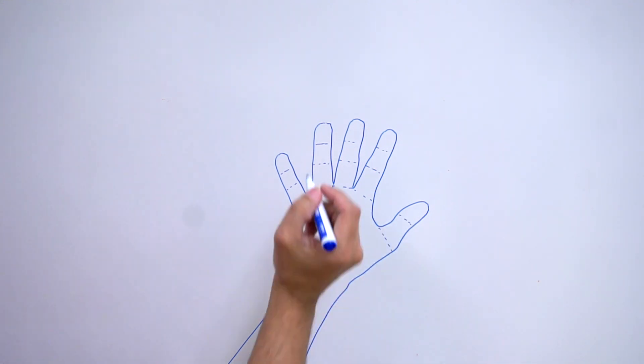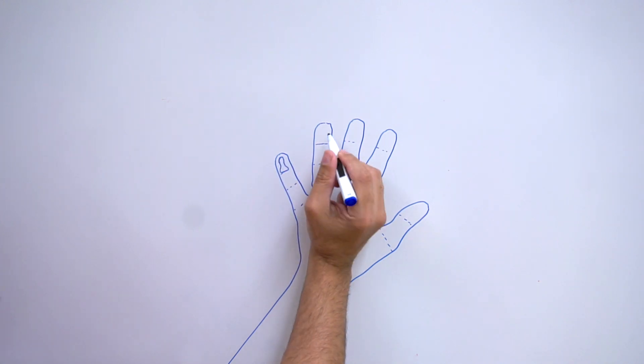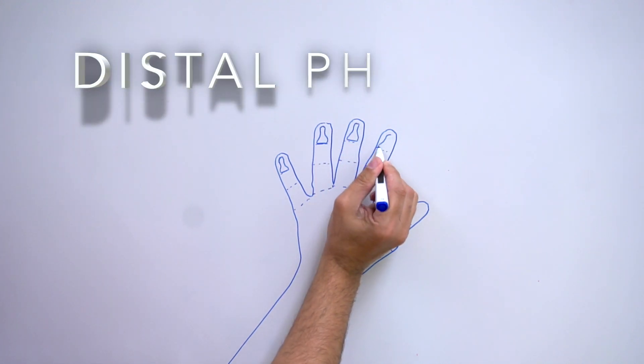Except the thumb, that's going to be into two parts. Now we're ready to draw the bones, the phalanges. We're going to start with the tip of the fingers. These are called the distal phalanx.